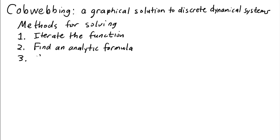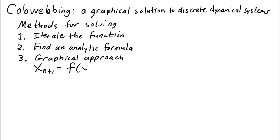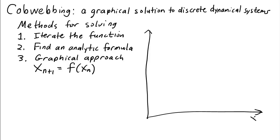Here we're going to focus on the third, graphical approach to solving a dynamical system. Given x_{n+1} = f(x_n), the beauty of this graphical approach is that we can use it for any f — we don't even need a formula. The approach is based on a graph of f, using x_n on the horizontal axis and x_{n+1} on the vertical axis. We plot the graph of f(x) and use it to estimate x_{n+1} for any value of x_n.